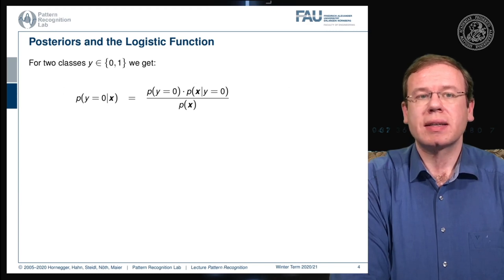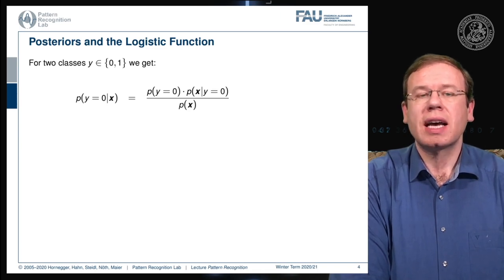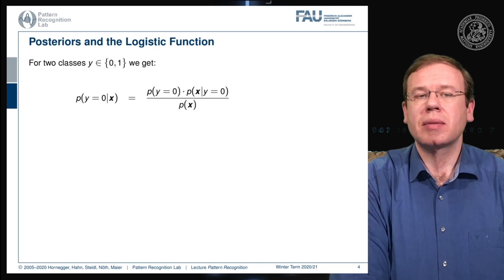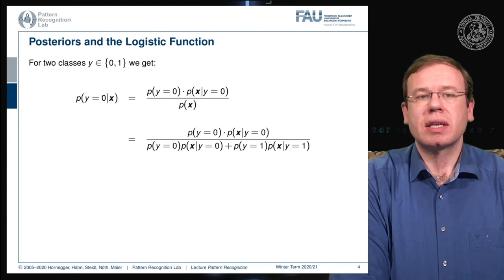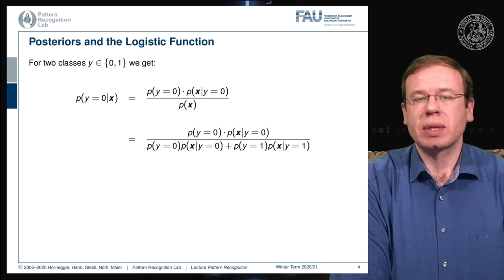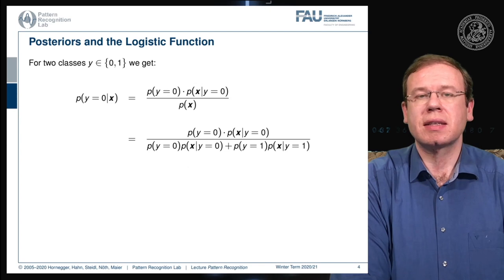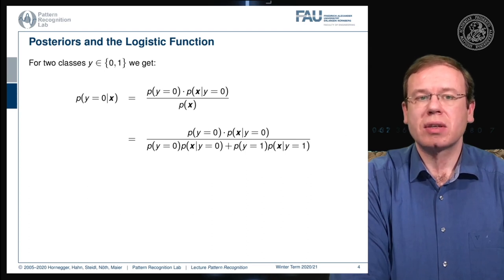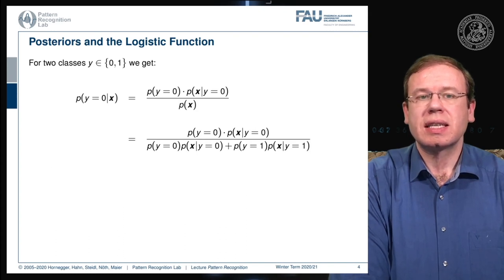Using Bayes theorem, we rewrite the probability as: the probability of observing class 0 times the probability of the observation given that class, divided by the probability of observing X at all. We can apply marginalization of X, expressing P(X) as the sum over joint probabilities, which we then replace with the priors and conditional probabilities.